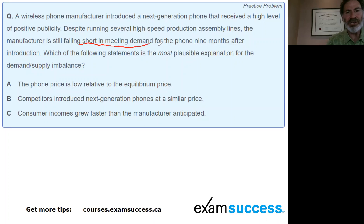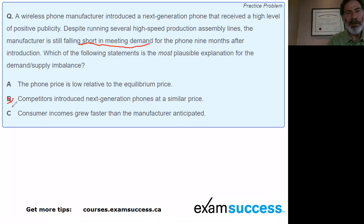Now let's look at the three choices. We can eliminate one right away — I'm pretty sure you can eliminate choice B: 'Competitors introduced next generation phones at a similar price.' I don't think this is really going to boost demand, so we can get this down to a 50-50.